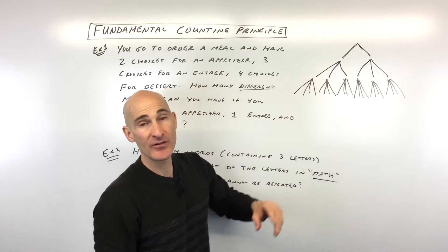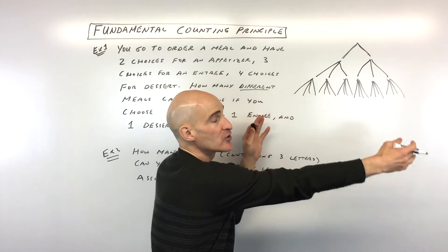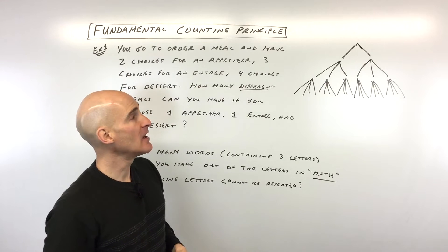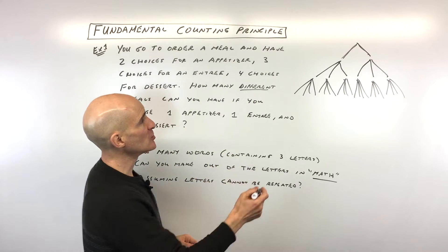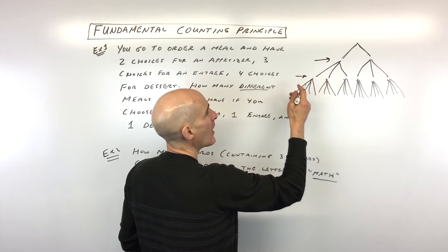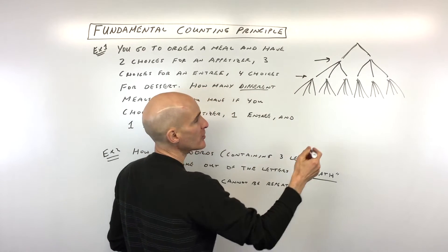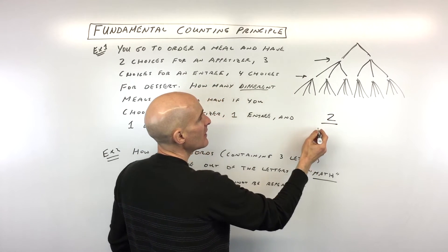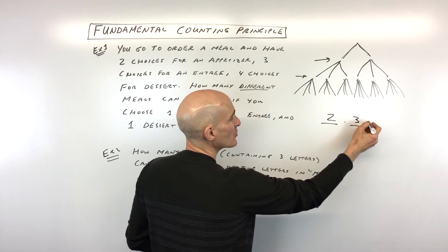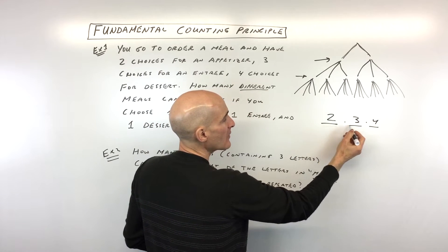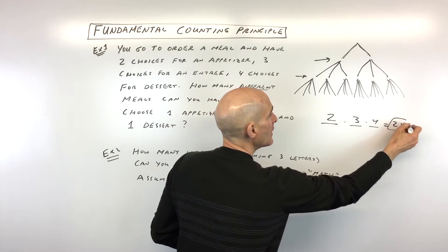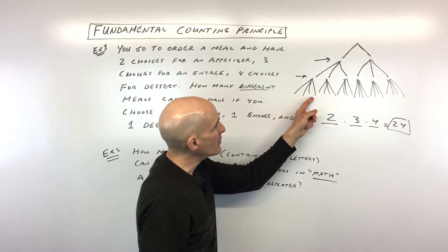You can see that if you have a lot of choices, this could quickly grow into a gigantic tree. It would take you a long time to draw it all out. So the shortcut is to look at each level and ask how many choices there are at each level. You've got two choices for the appetizer, three for the entree, four for the dessert.